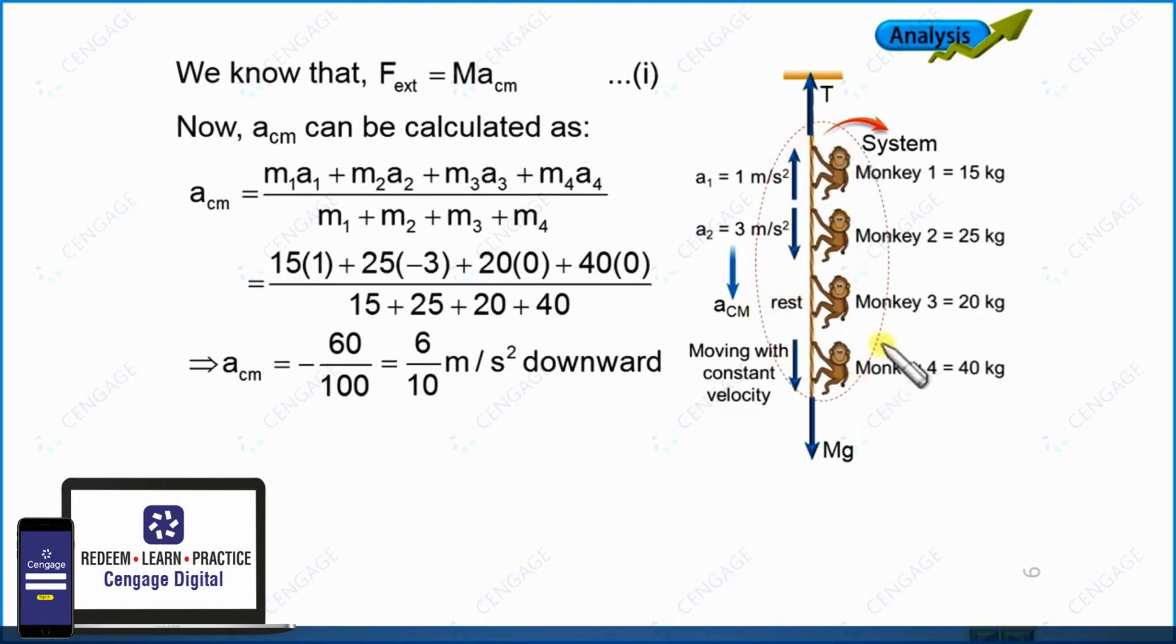Now we can apply Newton's second law for the system of particles. We can write F_net equal to mass multiplied by acceleration. Since acceleration of the center of mass is in the downward direction, we can write net force as capital Mg minus T equal to M multiplied by a_cm.